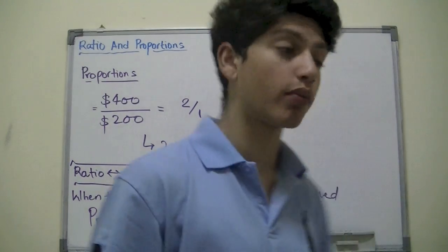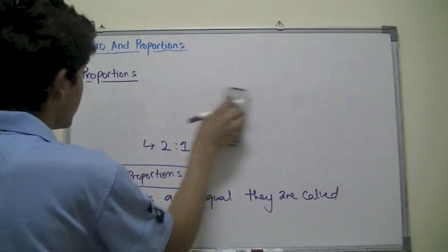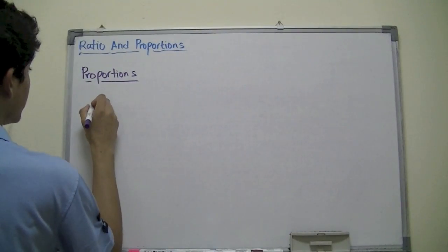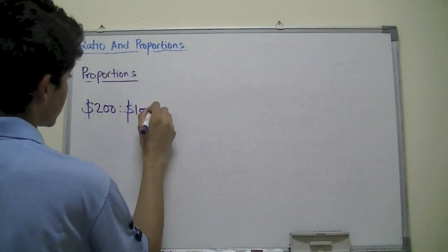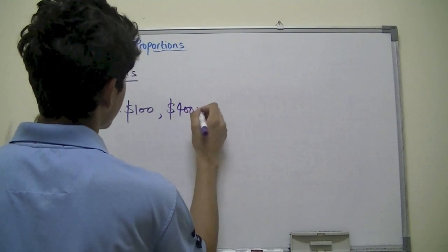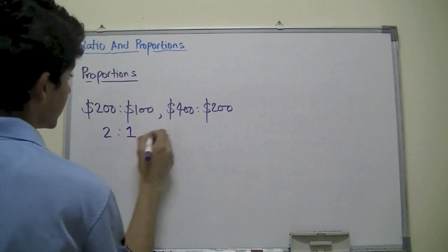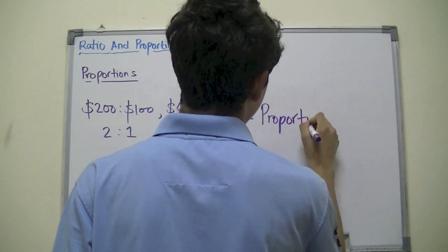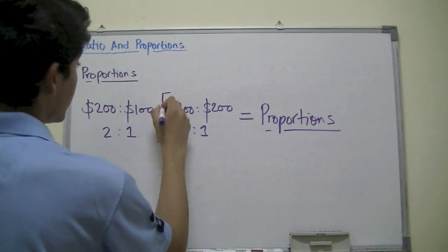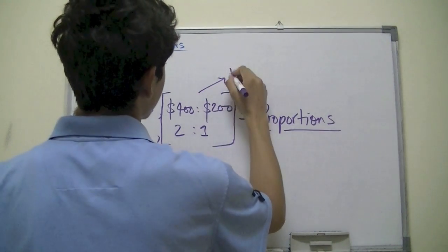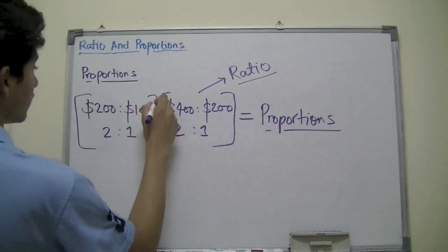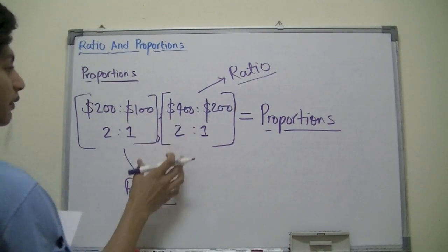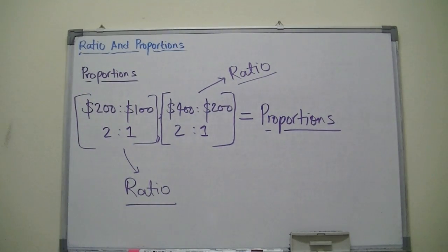Let's write down the whole set of the proportion. In the first one, it would be $200 is to $100. In the second one, it was $400 to $200. Since the ratio came out to be the same, they are known to be in proportion. Now each of them, though, is a ratio. When two ratios are similar or combined to each other, they are known as proportions.